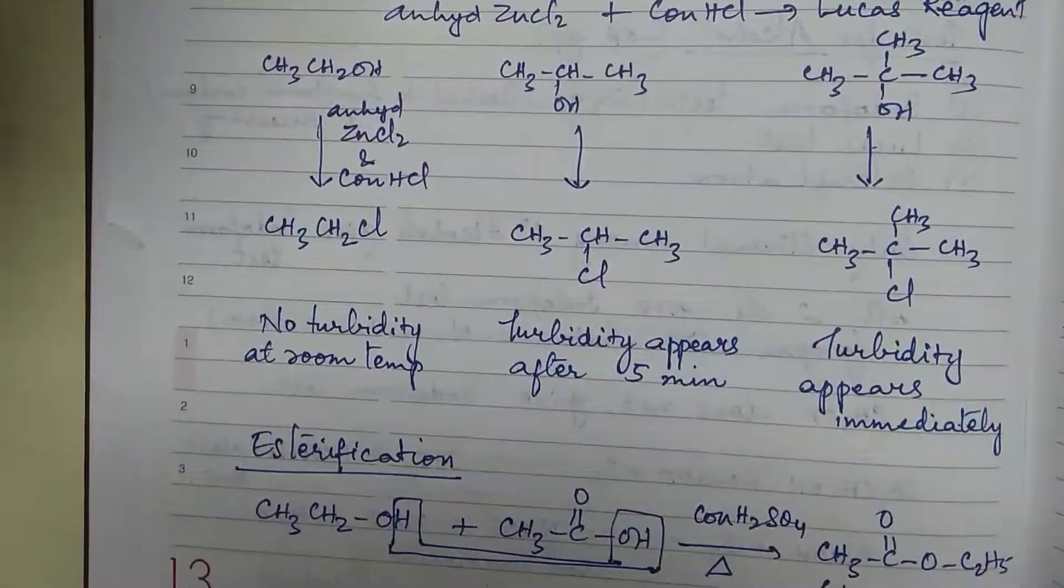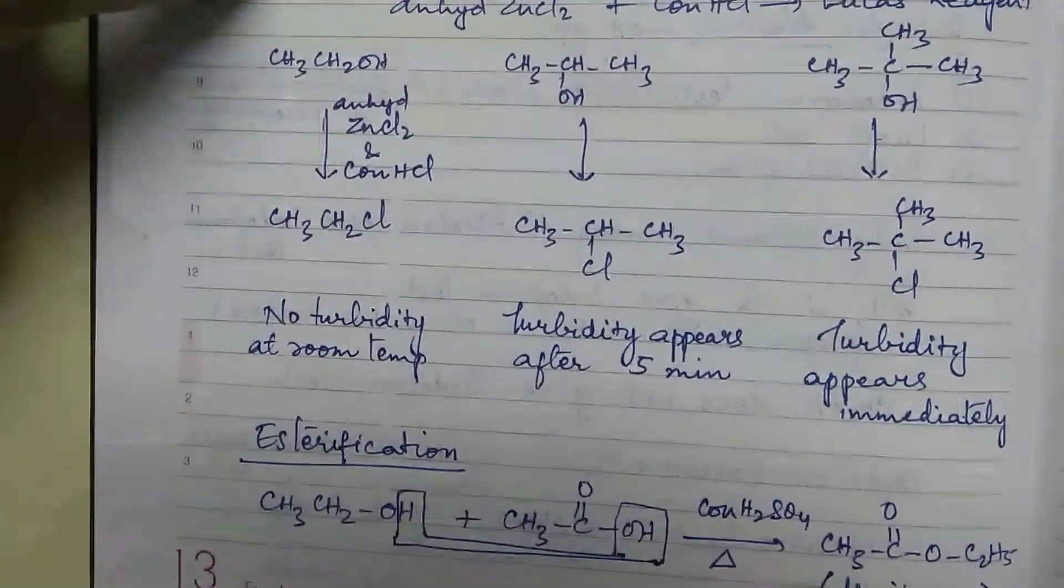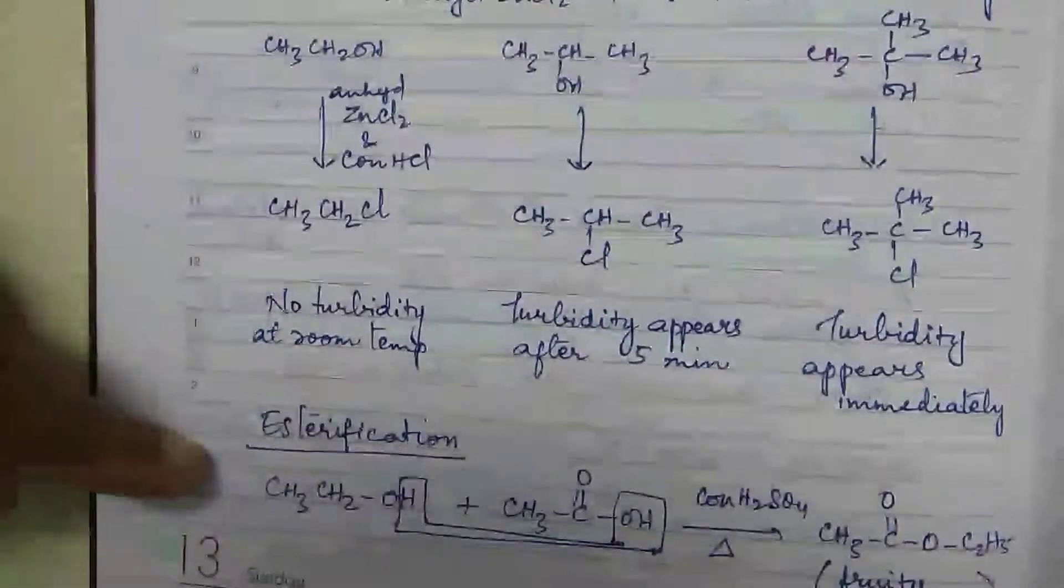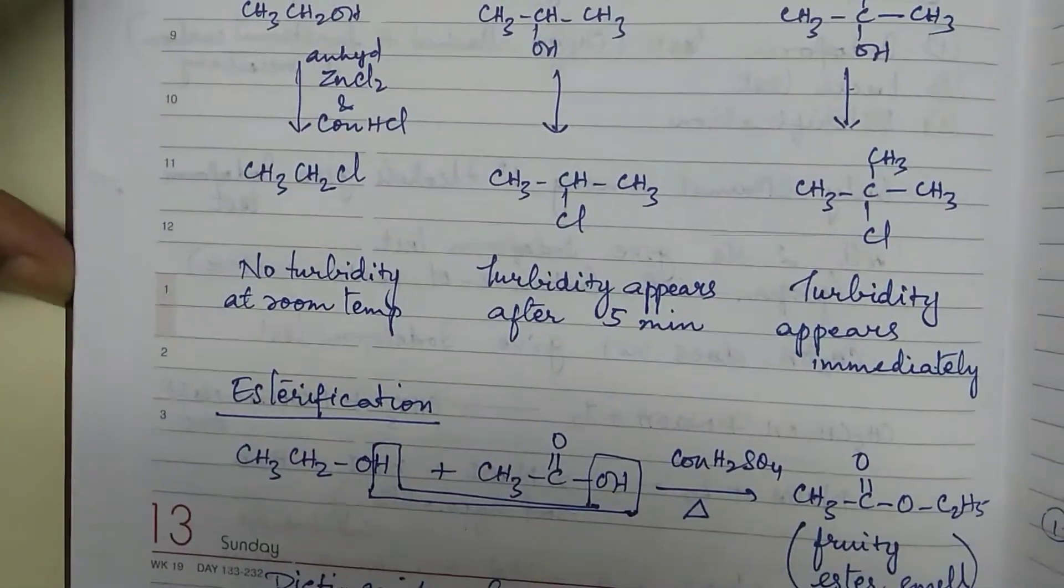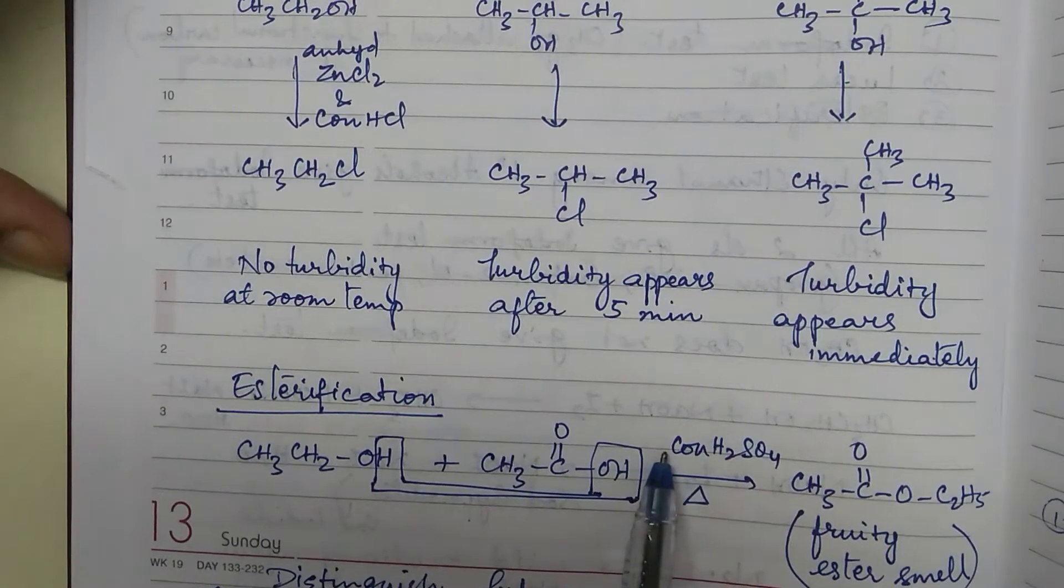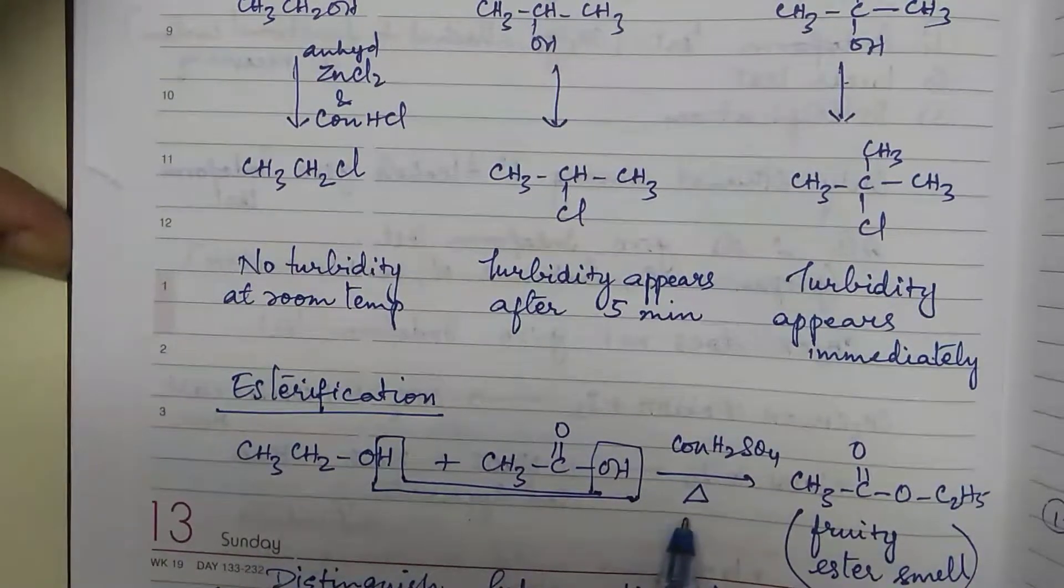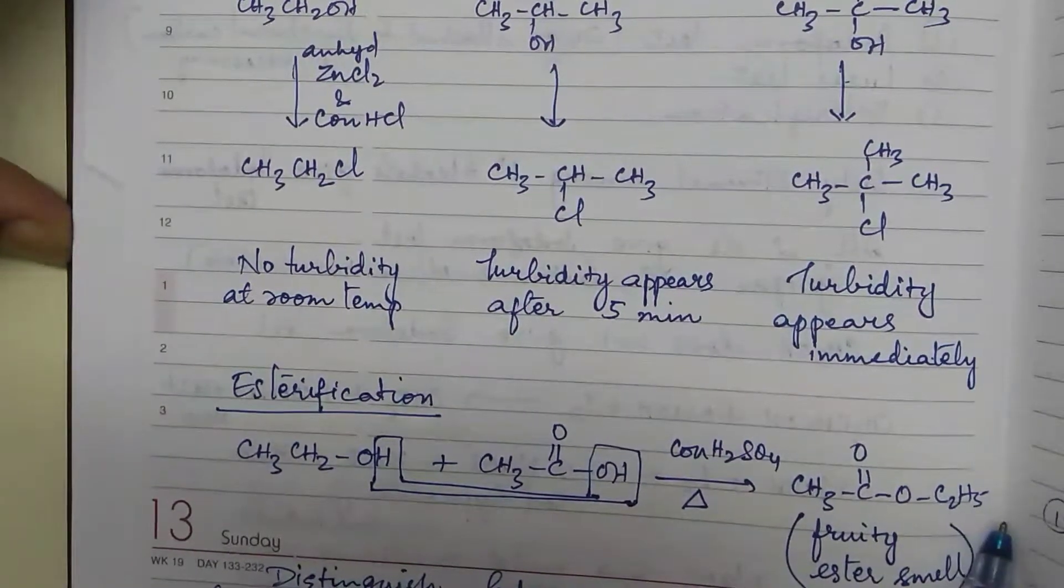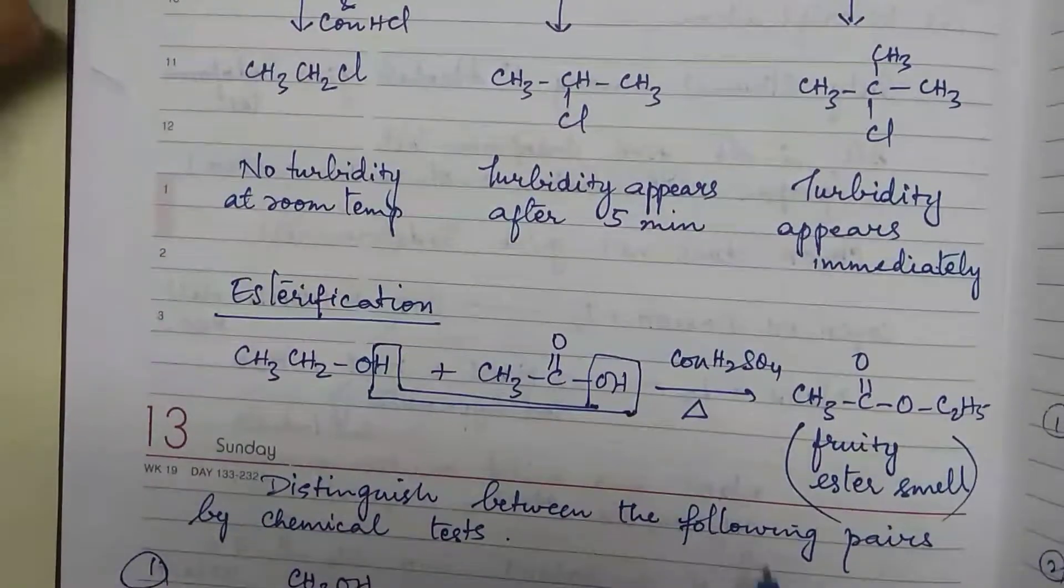So first one was iodoform test, then Lucas test and then esterification. What is esterification? Alcohol and acid react in the presence of concentrated sulfuric acid. When you boil them, boil the mixture, you will get a fruity ester smell. That is called as esterification.